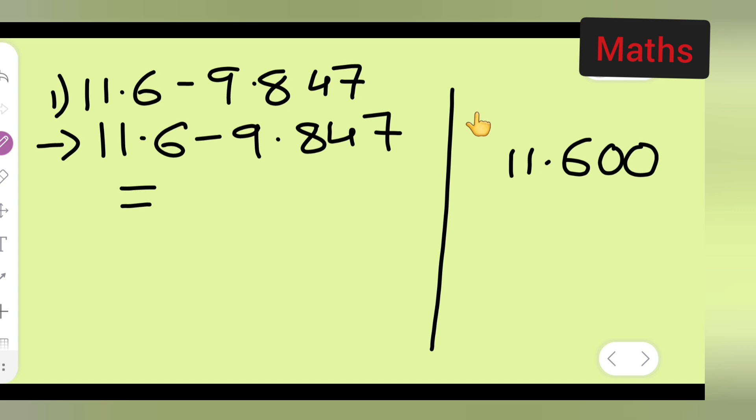Zeros don't have any value, so now what you do is write 9.847 over here, minus.